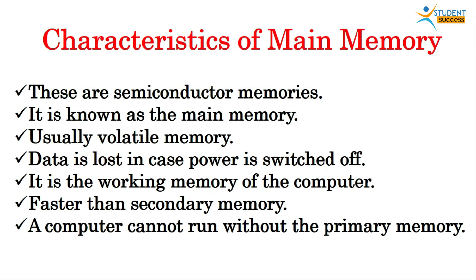Characteristics of primary memory: these are semiconductor memories, also known as main memory. It is usually volatile in nature — data is lost if the power is switched off. It is the working memory of the computer, faster than secondary memory, and a computer cannot run without primary memory.